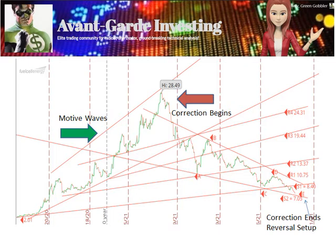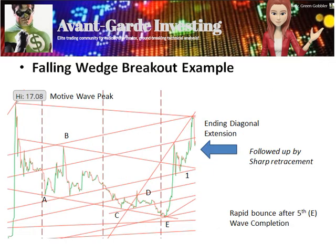This example shows the breakout strength after a falling wedge correction. The new impulse wave 1 was so strong it included an ending diagonal extension. However, ending diagonals often precede a sharp retracement due to the overextended buying run.